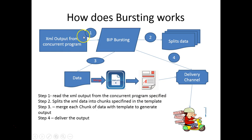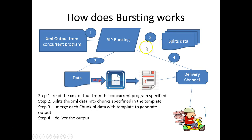So how does it work? The XML output is generated from the concurrent program. The BI bursting engine then picks it up. First, it splits the data into multiple chunks. It then takes the data and merges it with the template — based on how the document needs to be generated — and generates the document and sends it through the delivery channel. These are the four steps that happen inside BI bursting.